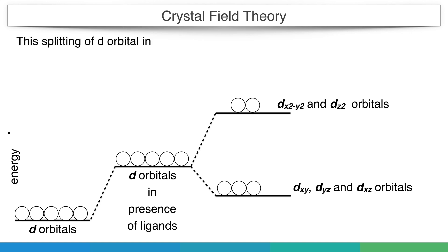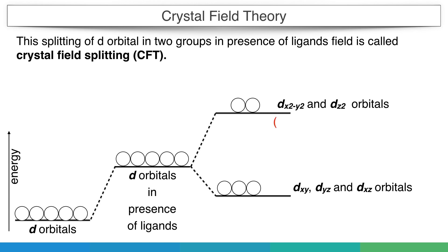This splitting of d orbitals into two groups in the presence of ligand field is called crystal field splitting. These two sets of orbitals are now given new names: the upper ones are called eg orbitals and the lower ones are t2g orbitals.